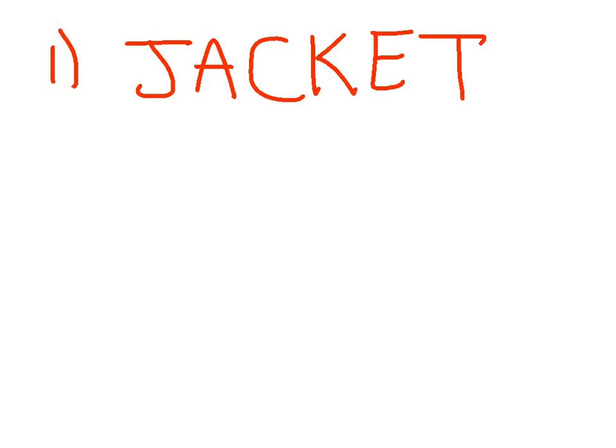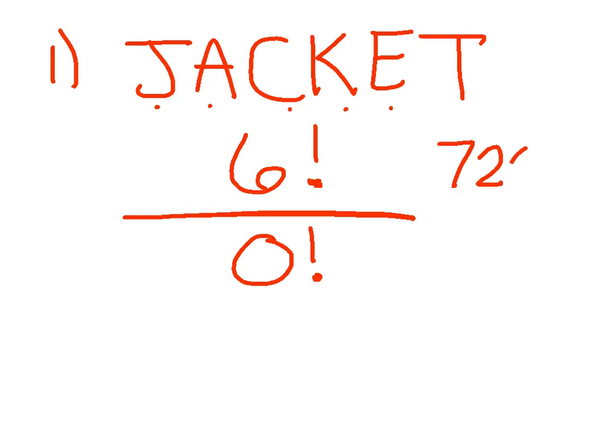Alright, so how many different arrangements can I make of the word jacket? Well, it's the number of letters total, one, two, three, four, five, six, factorial, divided by any amount of letters that repeat. Well, does anything repeat here? Nope. So I'm going to say that's zero factorial. So again, if you've got the updated calculator, use that fraction button. If you don't, we're going to do each one separately. So six factorial is 720 divided by zero factorial is one. So my final answer is 720.